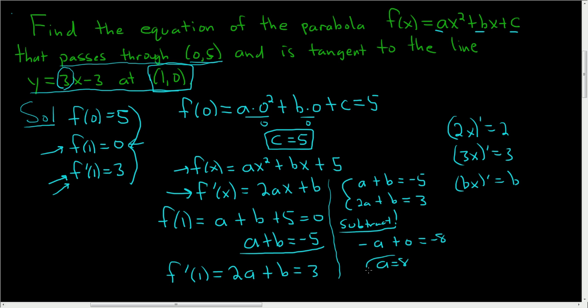Now we'll plug a back into the equation a + b = -5. So 8 + b = -5, which means b = -13. We have a, b, and c.